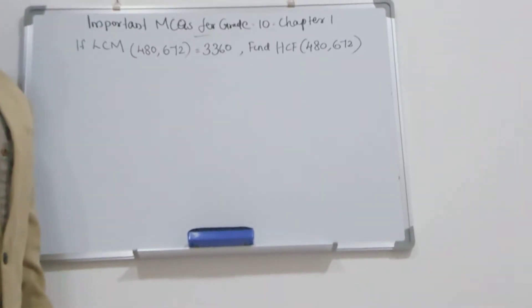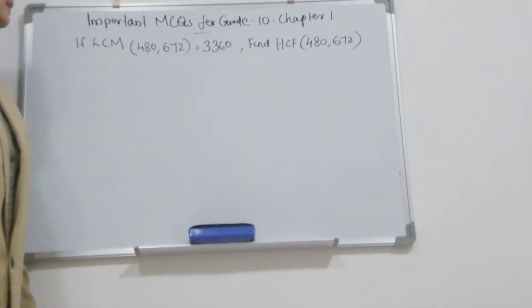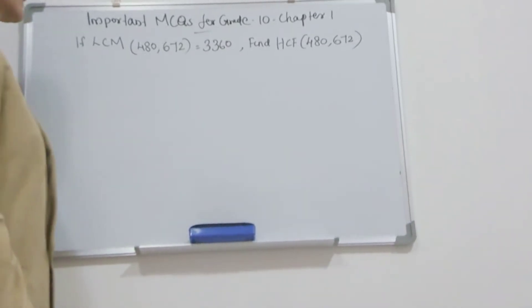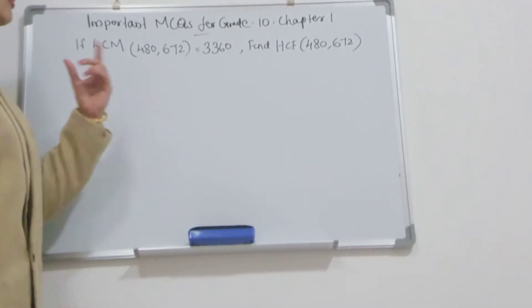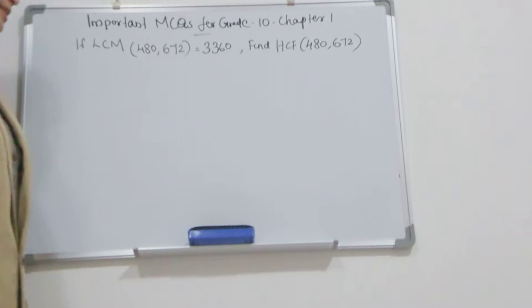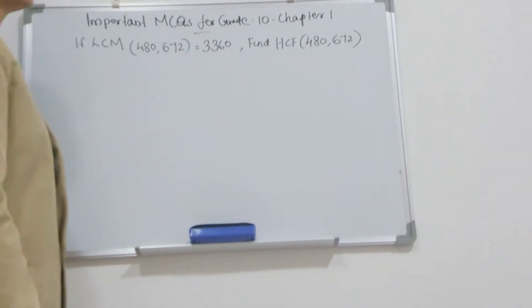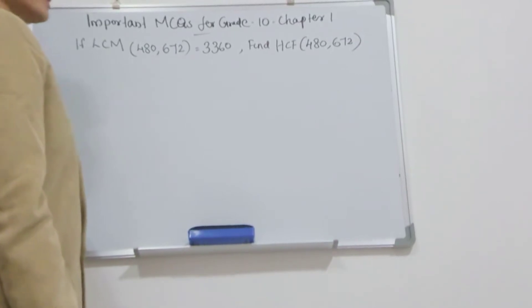Welcome to complete solution for maths. Our question is: if LCM of 480, 672 is 3360, find HCF of 480 and 672.